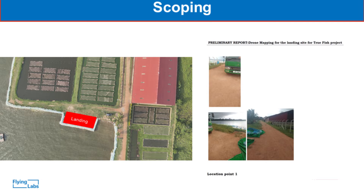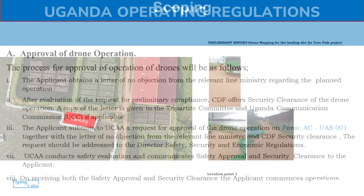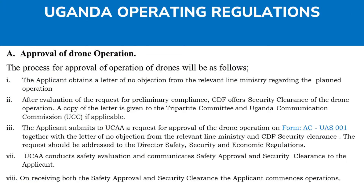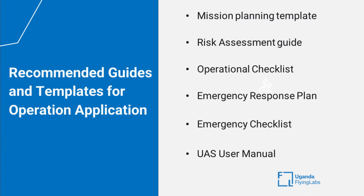Scoping can include visiting the site to better understand the area, identify any potential obstacles, and identify takeoff and landing areas. This can help modify and finalize the flight plan to ensure a successful mission. Permitting involves ensuring that permissions and permits needed for a safe flight are identified, permit applications are submitted, and all necessary permits and permissions are obtained.